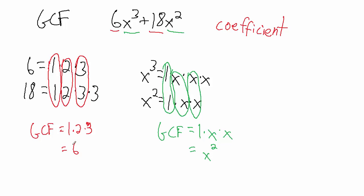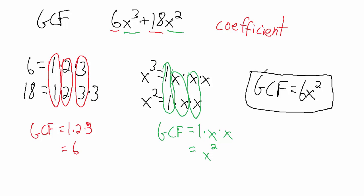The greatest common factor for the coefficients is 6, and the greatest common factor for the variable parts is x squared. So the overall greatest common factor for the entire algebraic expression is 6 multiplied by x squared, which is 6x squared. To summarize: find the GCF of the coefficients, then find the GCF of the variable parts by expanding the powers and identifying common factors. We'll see more examples in the upcoming videos.